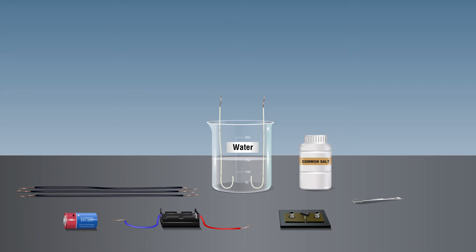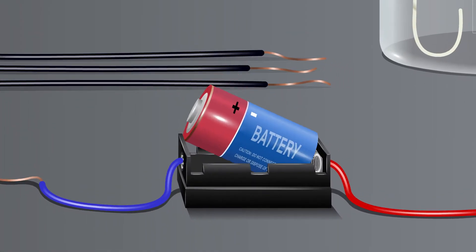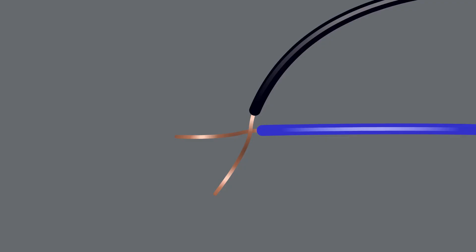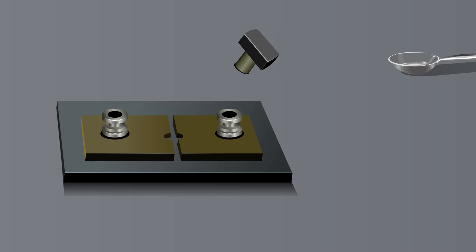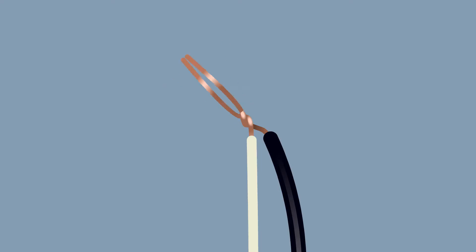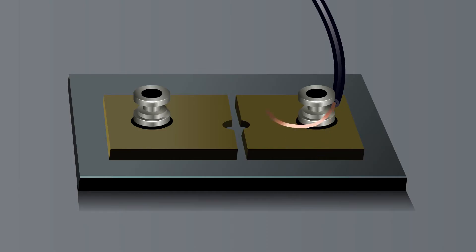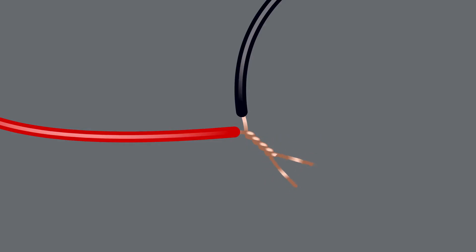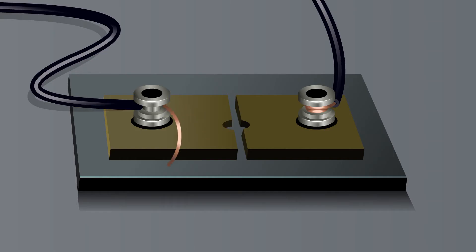Insert the U-shaped connecting wire in the water and connect its other end to the positive terminal of the battery. Connect the second U-shaped connecting wire to the negative terminal of the cell through the key.